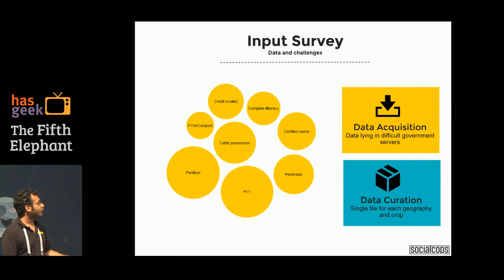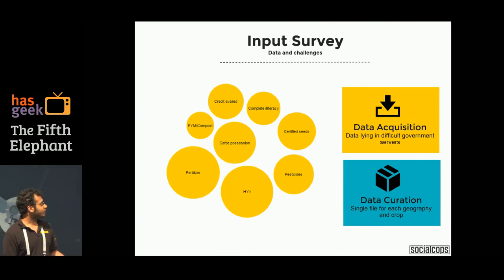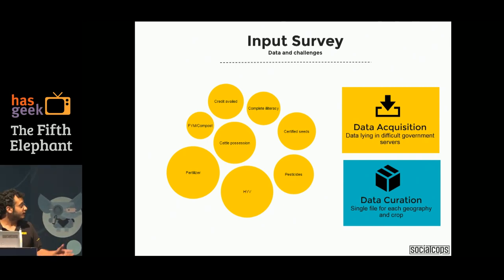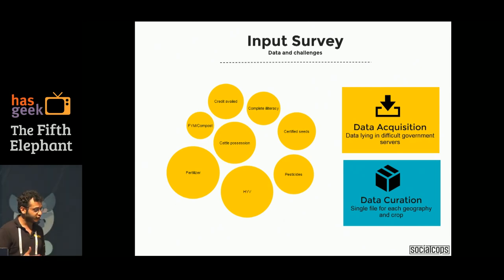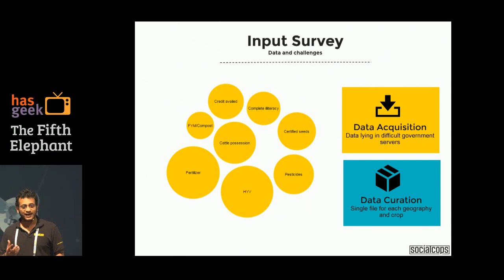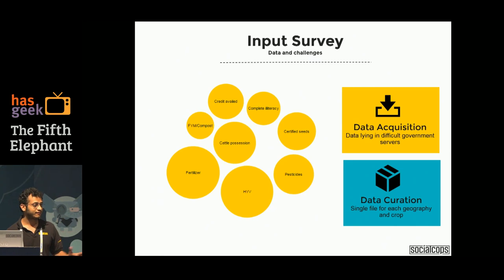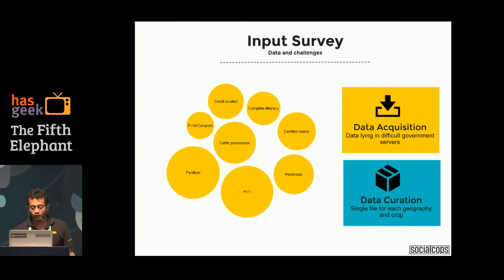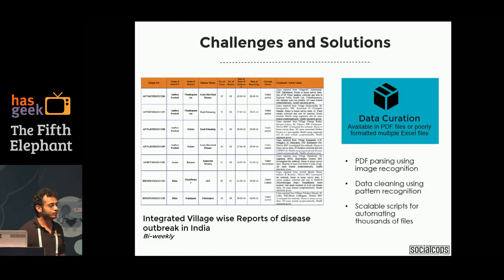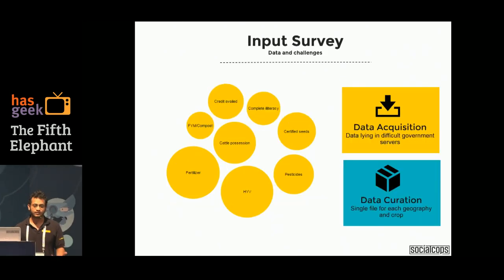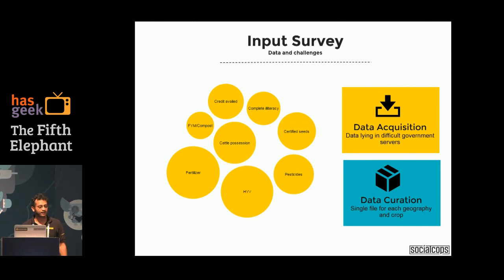Another very important dataset for decision making in agriculture is the input survey. It covers all the input systems that go into the production of crops. Any decision maker wanting to increase the productivity of pulses would typically invest in these inputs that augment productivity. This dataset gives us district-level information about what kinds of inputs are available to farmers. Using such datasets, we've been able to come down to decisions in less than 3 months, which would have ideally taken more than a year.